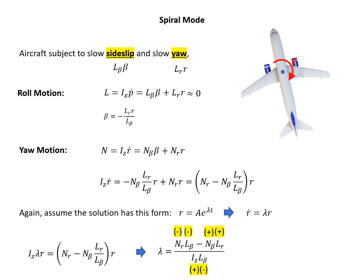Usually Iz, let's start from the denominator. Iz is positive, L beta is negative, so the denominator is negative. But on the numerator, Nr and L beta usually are negative, so the multiplication is positive. On the second term, N beta times Lr, both are positive, so it's positive in the second term. We have positive minus positive, so there are several outcomes.